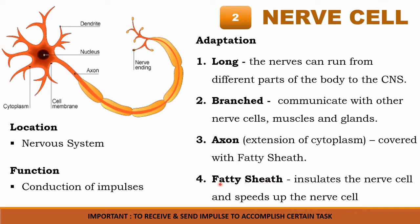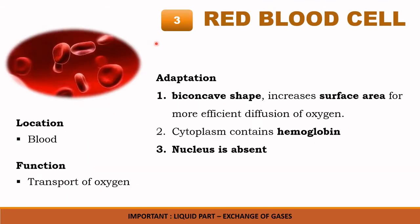The myelin sheath acts as an insulator — this fatty sheath insulates the nerve cell and speeds up nerve impulse transmission. These nerve cells are found in the nervous system, and their function is to conduct impulses.